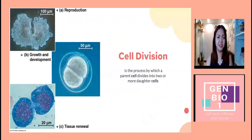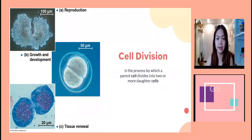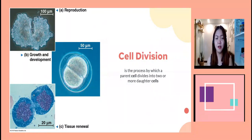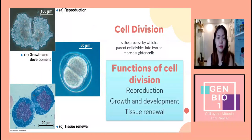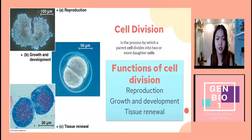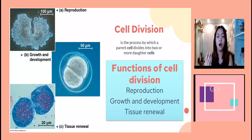Let's start with cell division. Cell division is basically the process by which a parent cell divides into two or more daughter cells. Most of the time we confuse mitosis as cell division — that's correct, but not all cell division is just mitosis, because we have other types of cell division. The functions of cell division include reproduction, growth and development, and tissue renewal. For reproduction, that is basically just the continuity of life.